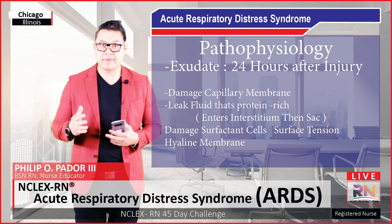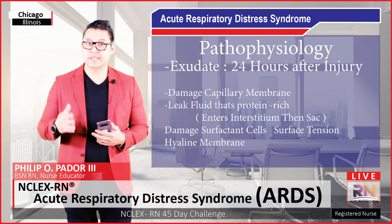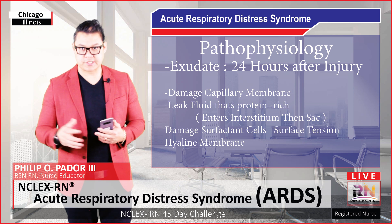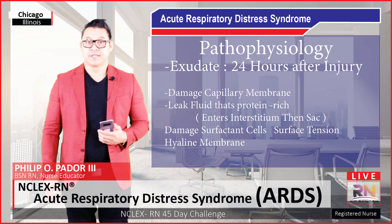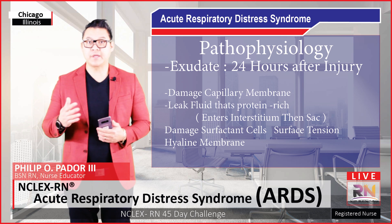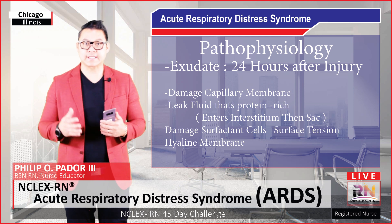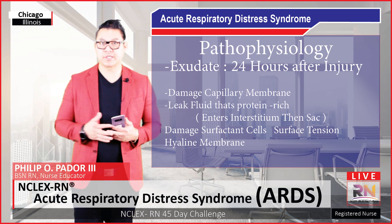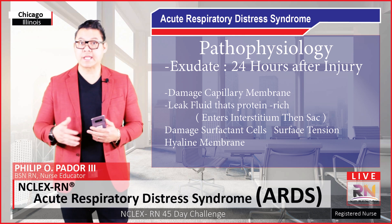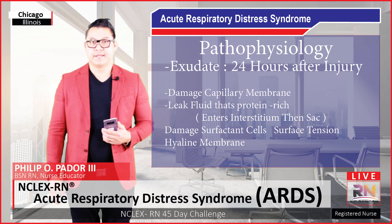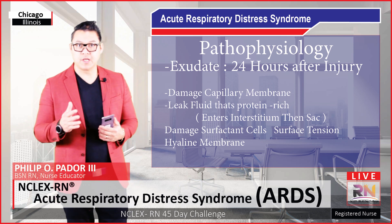So we're going to have a decreased amount of surfactant being produced. Surfactant helps decrease the surface tension — in other words, it helps the sac stay stable. So with decreased surfactant, you have an unstable alveolar sac that's going to collapse, and they're going to develop a condition called atelectasis. With atelectasis, the person's not going to be able to move oxygen in. Because the sac is collapsed, oxygen levels are going to fall — hypoxemia.